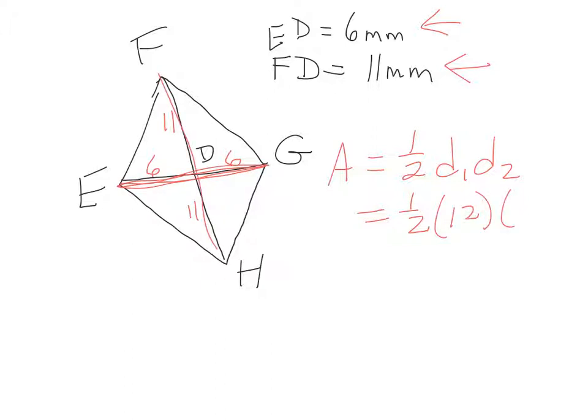The other diagonal is this one here. 11 plus 11 is 22. So what we're going to do now is one half of 12 is going to be six, and six times 22...